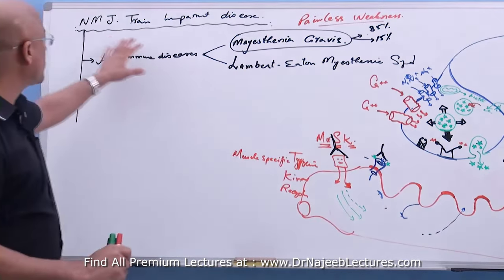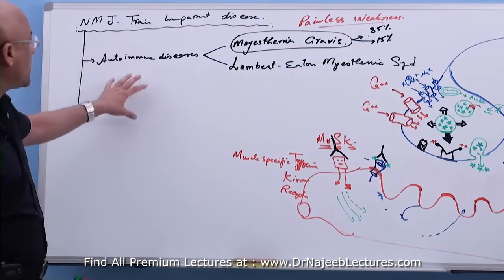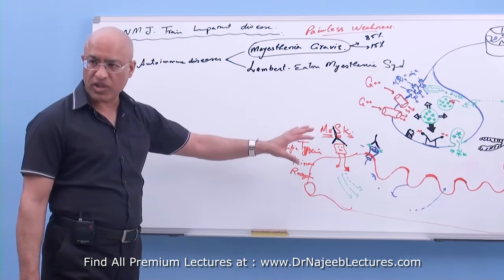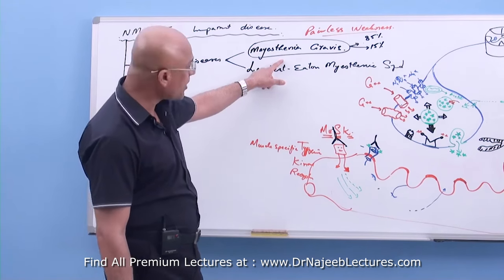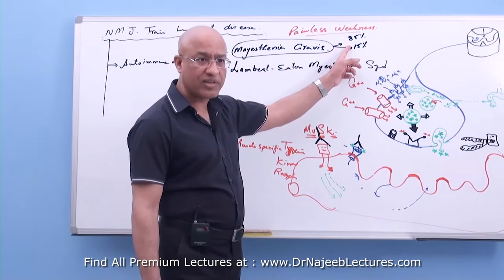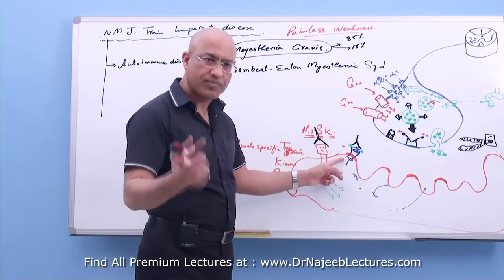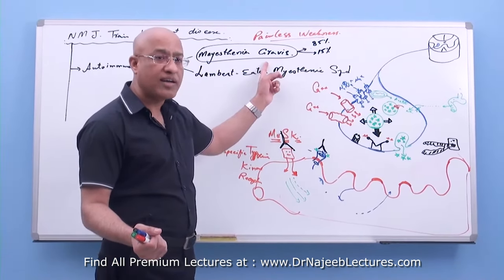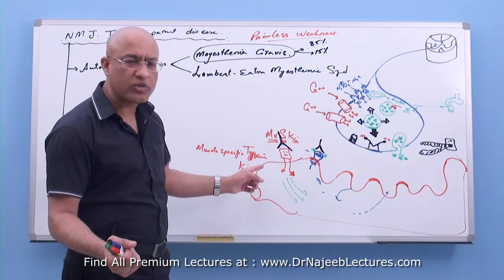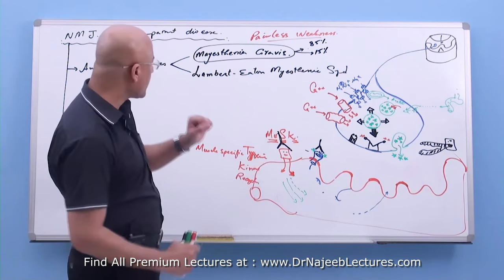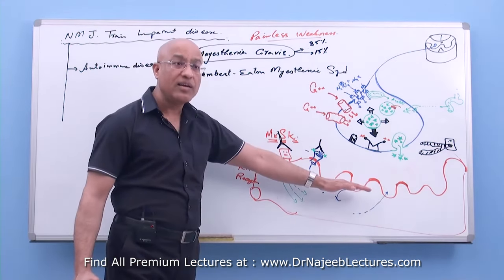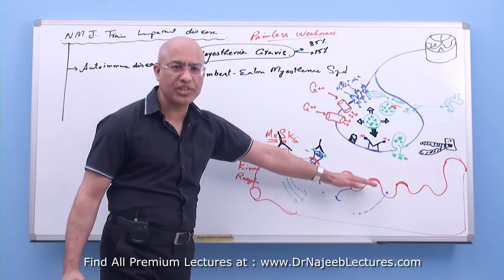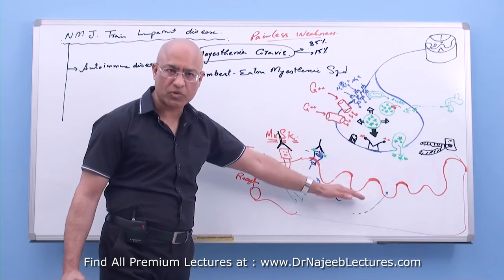So what did we learn? Disorders of neuromuscular junction transmission — number one, we are talking about autoimmune disorders in which antibodies are formed against components of the neuromuscular junction. In Myasthenia Gravis, in most patients, antibodies are directed against nicotinic acetylcholine receptors, and in 15% against Muscle Specific Tyrosine Kinase receptors. In both cases, functional cholinergic ion channels are not available in sufficient amount, impairing neuromuscular transmission.